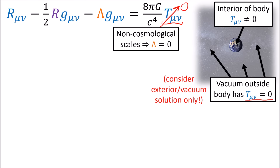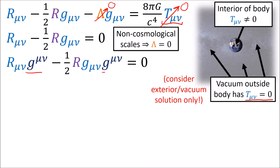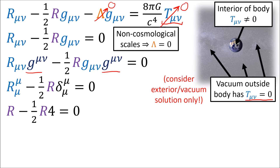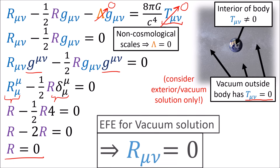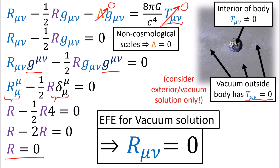We're also going to set the cosmological constant to zero, since it's basically negligible unless we're working at cosmological scales. If we take the trace of what's left using the inverse metric to raise an index, the trace of the Ricci tensor is the Ricci scalar, and the trace of the 4x4 identity matrix is 4, so the Ricci scalar is zero. For a vacuum region, the Einstein field equations simplify to just the Ricci tensor being zero, which we call a Ricci flat spacetime.